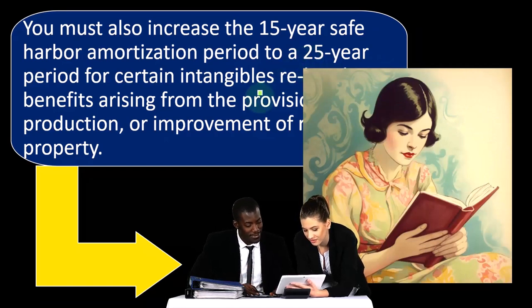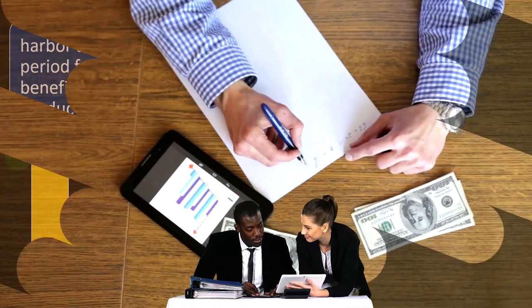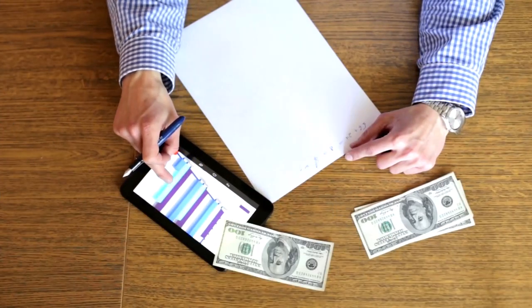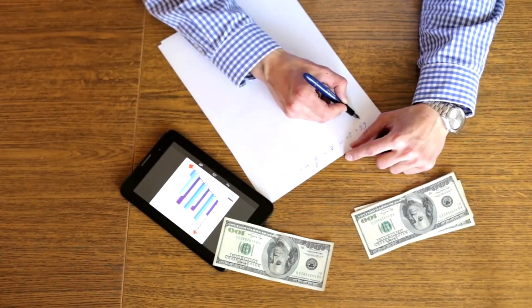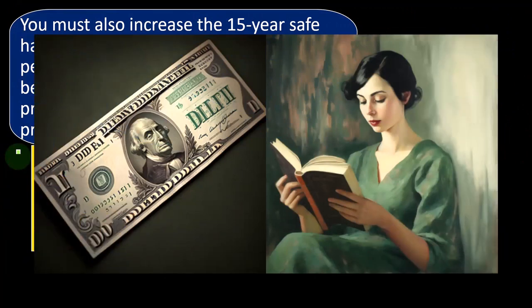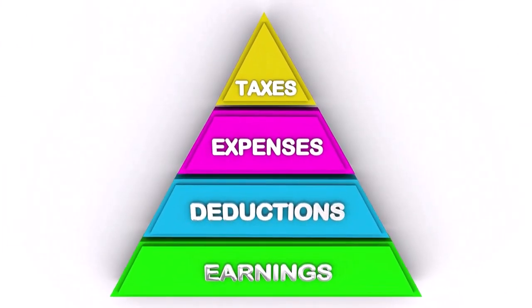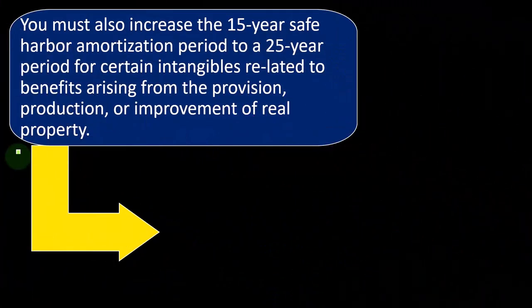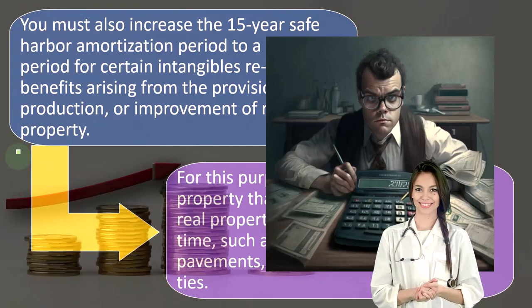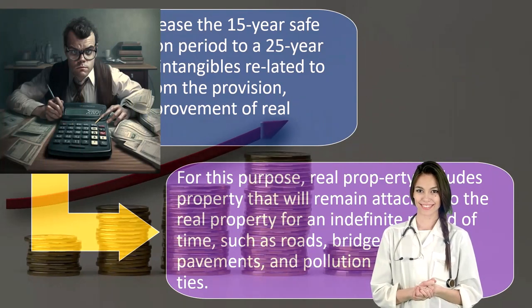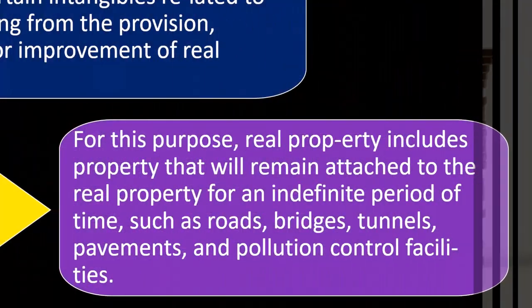As a general rule, we would like accelerated depreciation methods over straight line if we can get them, because that front-loads the depreciation — more depreciation in the beginning years and less in the latter years. If we can depreciate everything up front in year one, that's usually but not always beneficial. Why wouldn't it be? Because it might affect our progressive tax structure — if in the following year we expect more income, we'll face higher rates, and it could be beneficial to have more deduction in that following year. For this purpose, real property includes property that will remain attached to the real property for an indefinite period, such as roads, bridges, tunnels, pavements, and pollution control facilities.